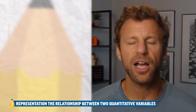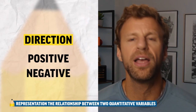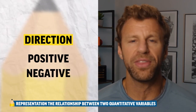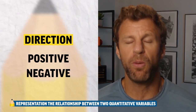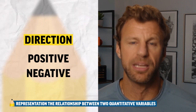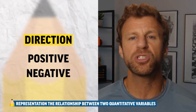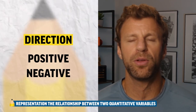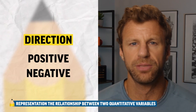First, when we talk about direction, we talk about positive or negative. The explanatory variable on the x-axis is always increasing. If the response variable is also increasing, we say that that's a positive direction. If the response variable is decreasing as the explanatory variable increases, that is said to be a negative direction.